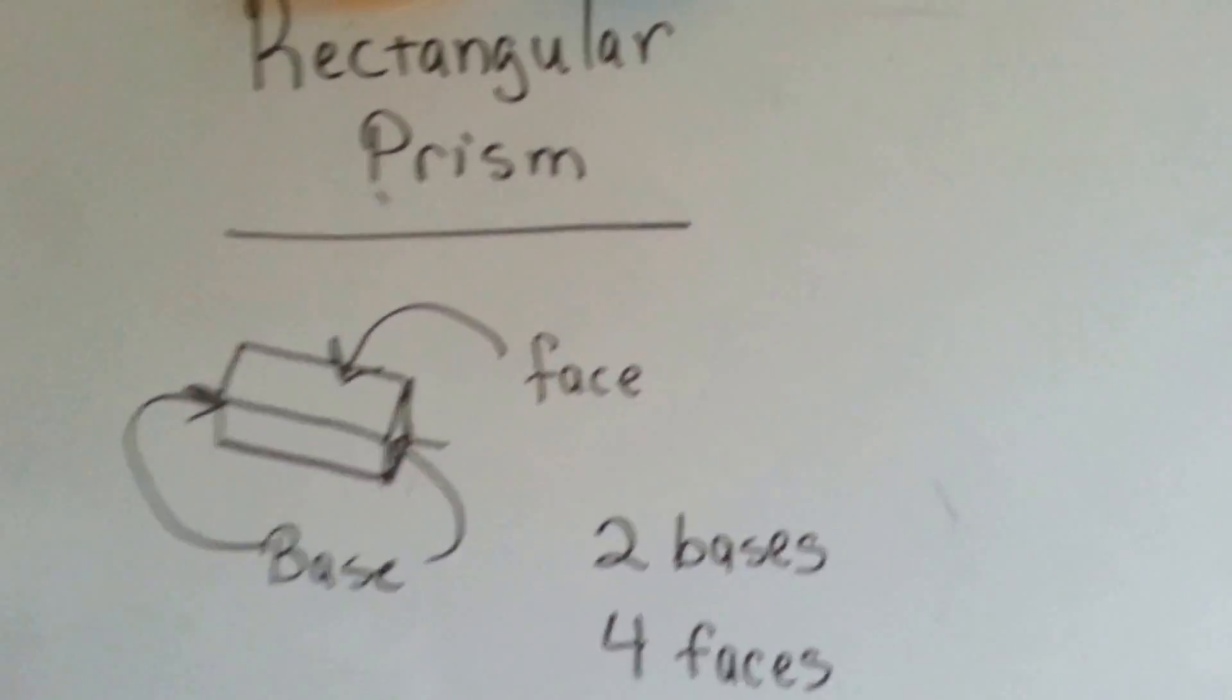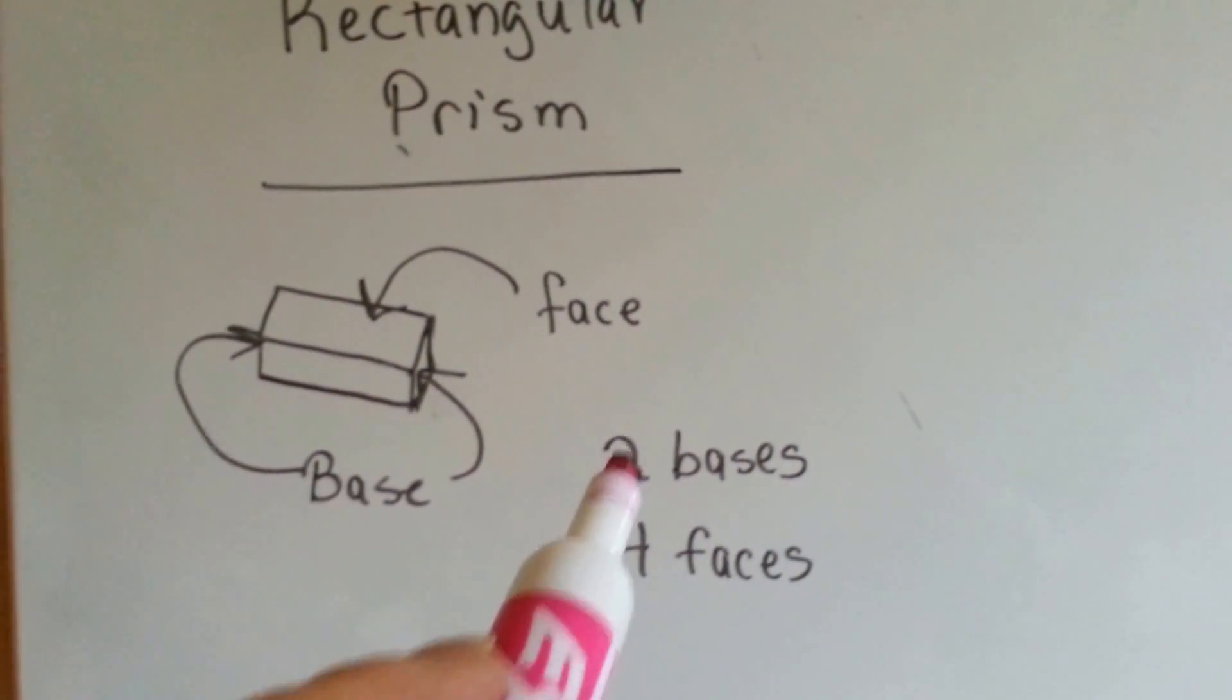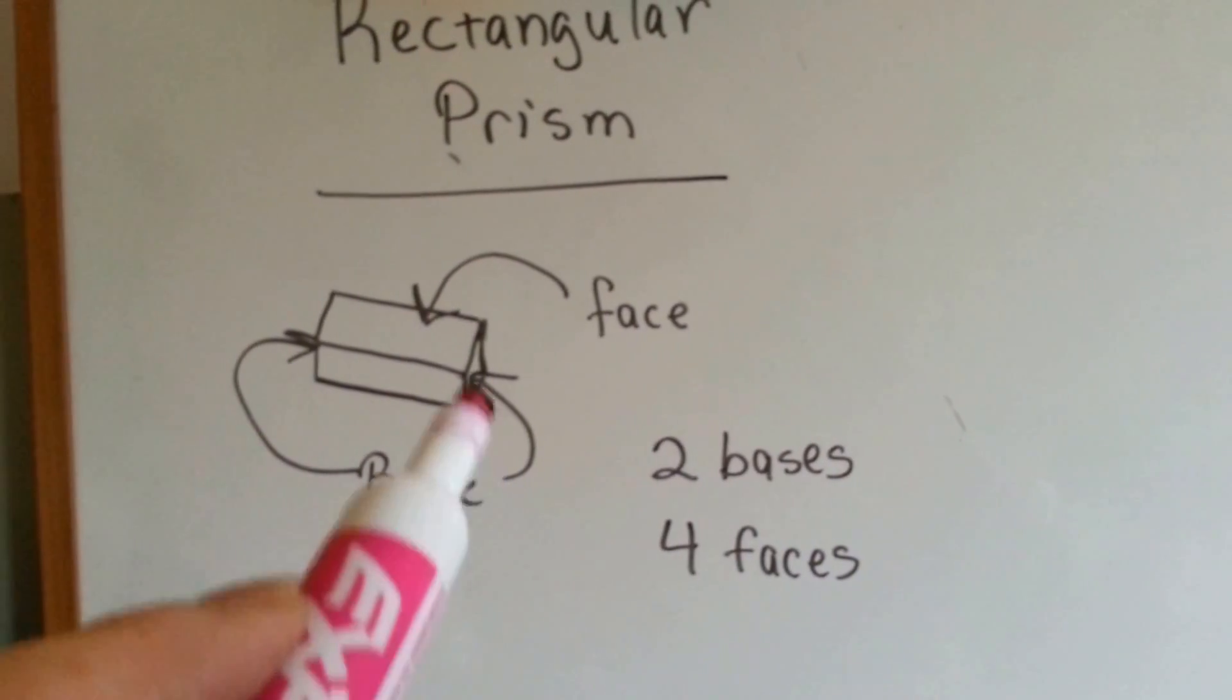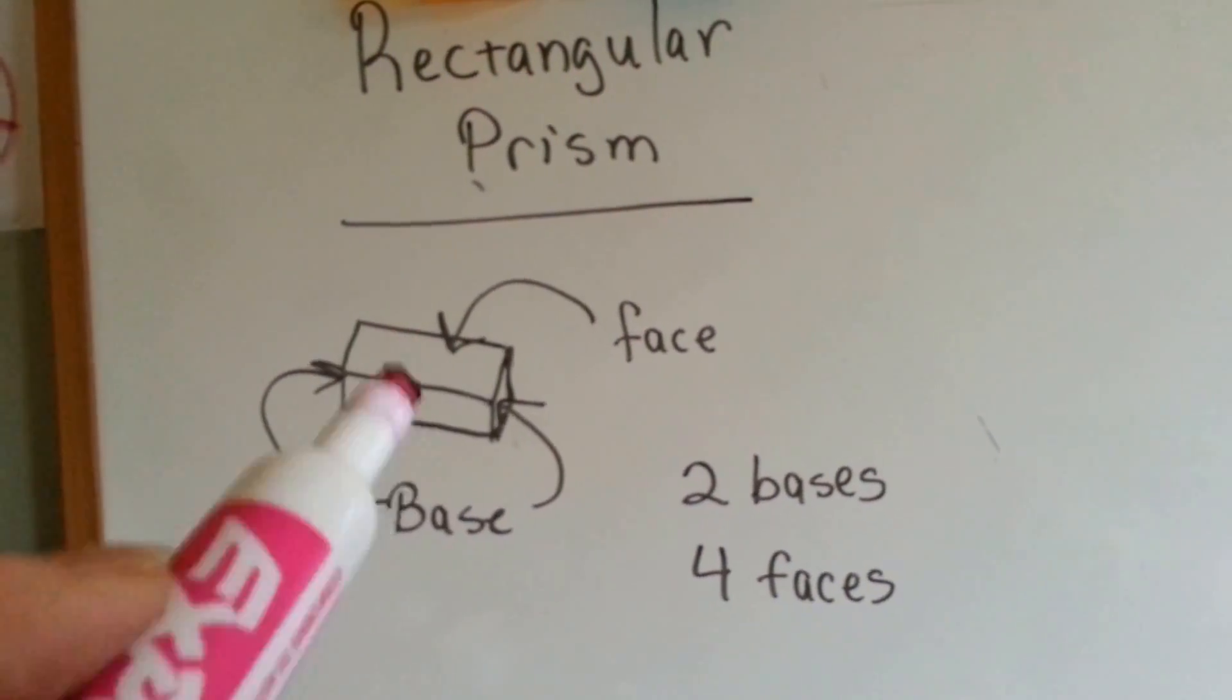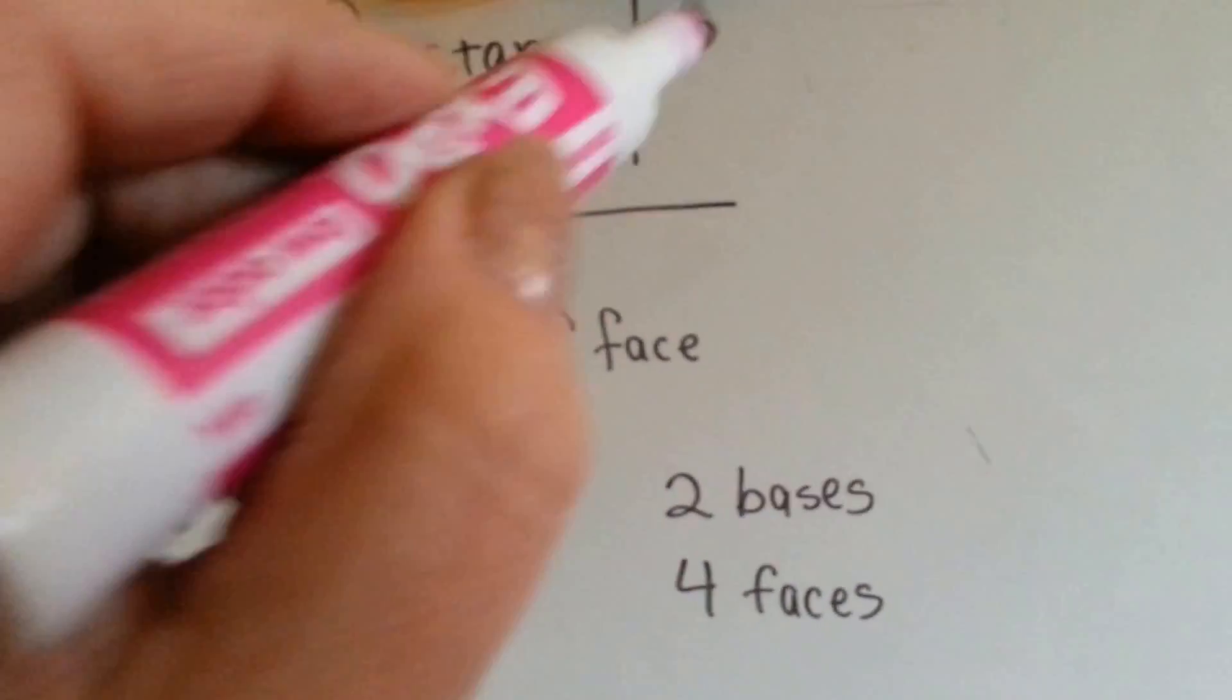In the rectangular prism, it's got two bases and four faces. Each of these square ends are the base, and the face is the four sides going around.